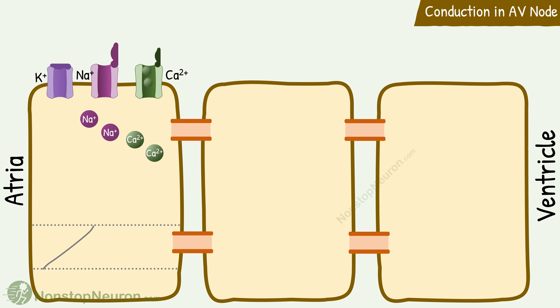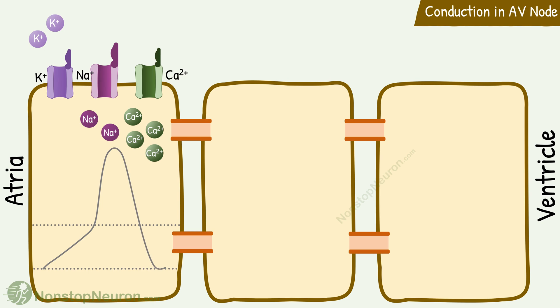The rapid entry of calcium produces the upstroke. Then potassium channels open, so there will be an exit of potassium ions. This repolarizes the cell.